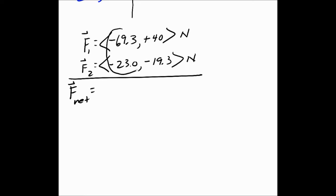And then the y one was pointing in the positive y direction. Now we'll write down f2. And that's going in the negative x direction. And it's going in the negative y direction. So now we're going to get f net by adding up the components. Get the x component by adding those up. We'll get the y component by adding those up. So the x component comes out to be negative 92.3. And the y comes out to be a positive 20.7.